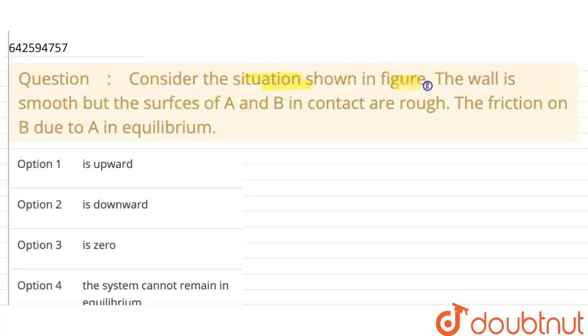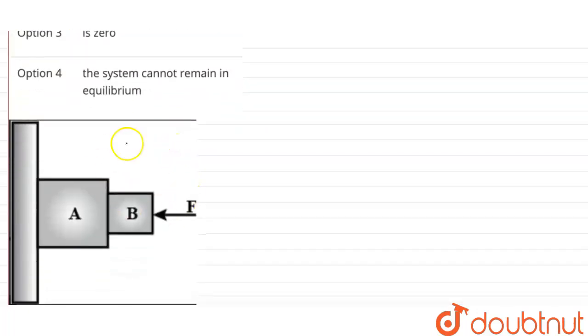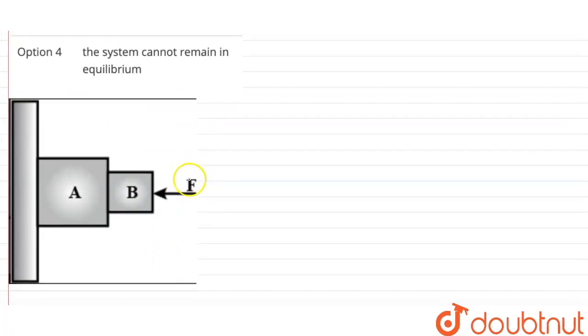Consider the situation shown in the figure. The wall is smooth, but the surfaces of A and B in contact are rough. Friction on B due to A in equilibrium. So basically, this is the situation when a force is applied.